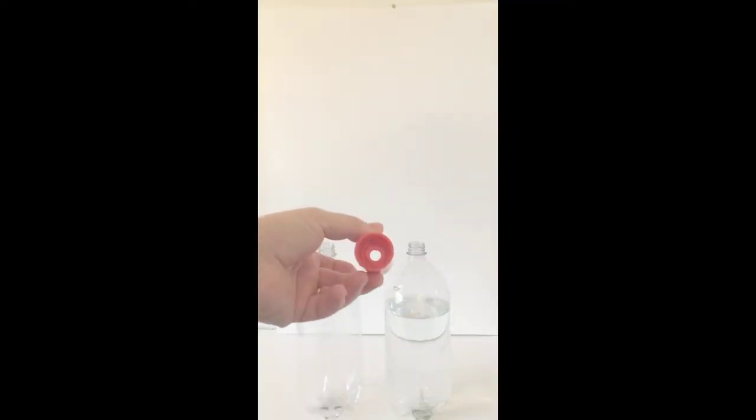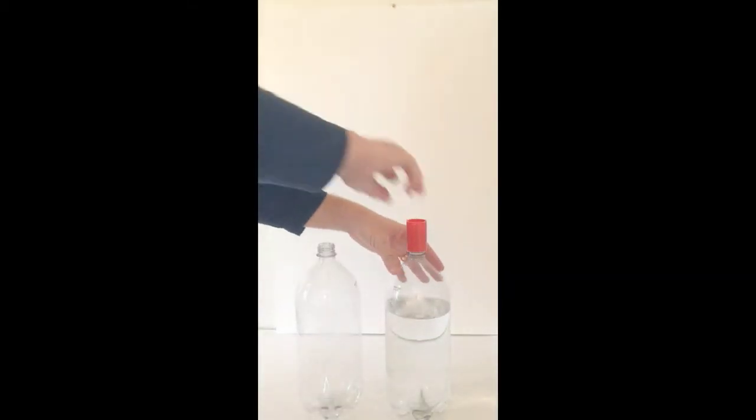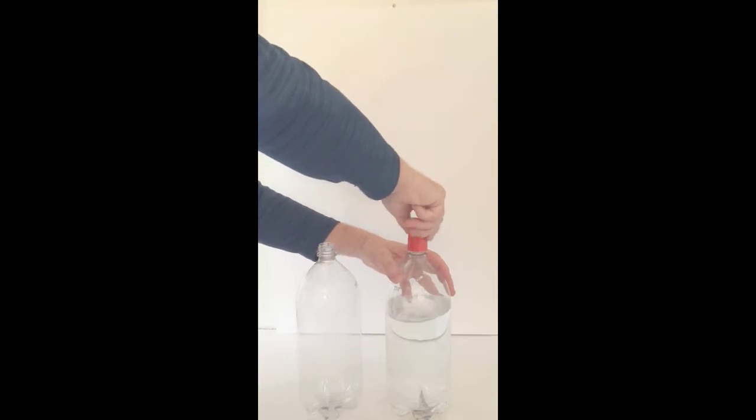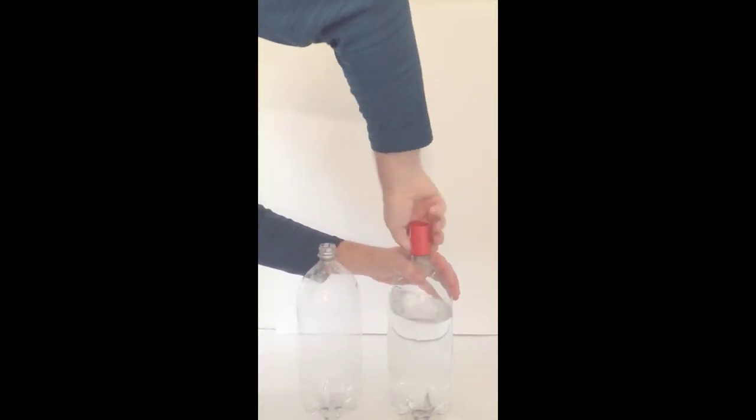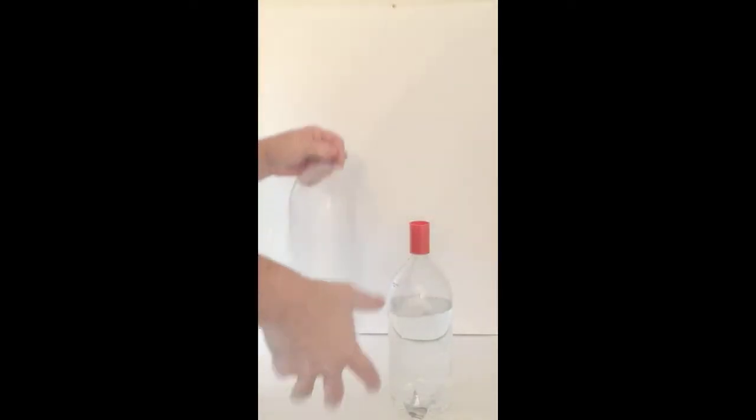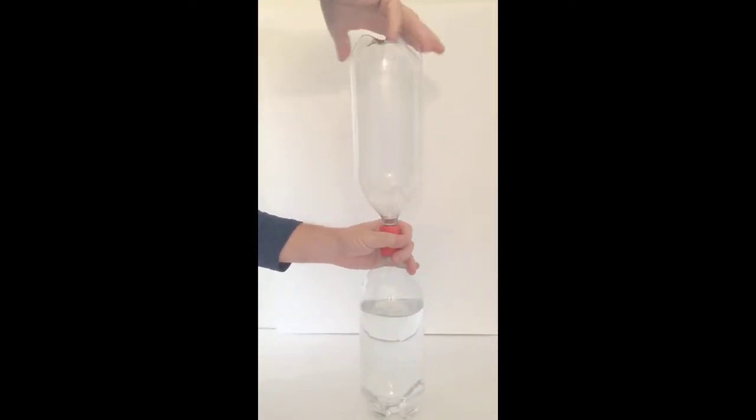Fill one of the bottles about three quarters way full of water, then take your tornado tube connector and tightly screw it on to the top of that bottle with the water in it. Once that's securely tight, take the empty bottle and screw that into the other connector end.